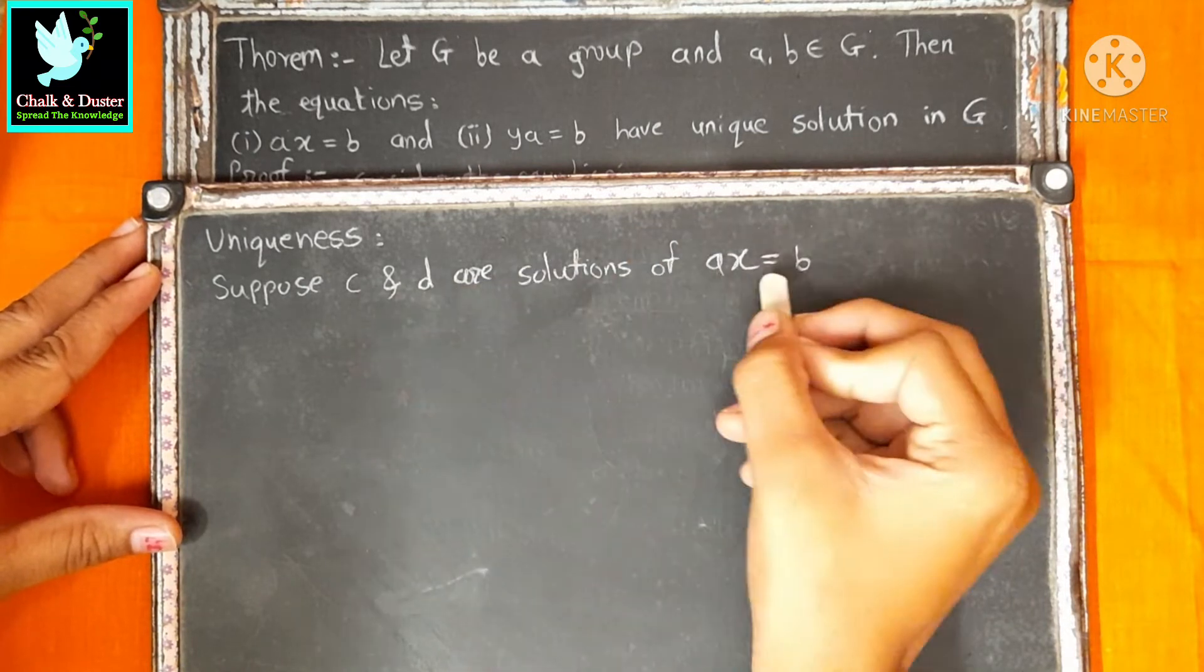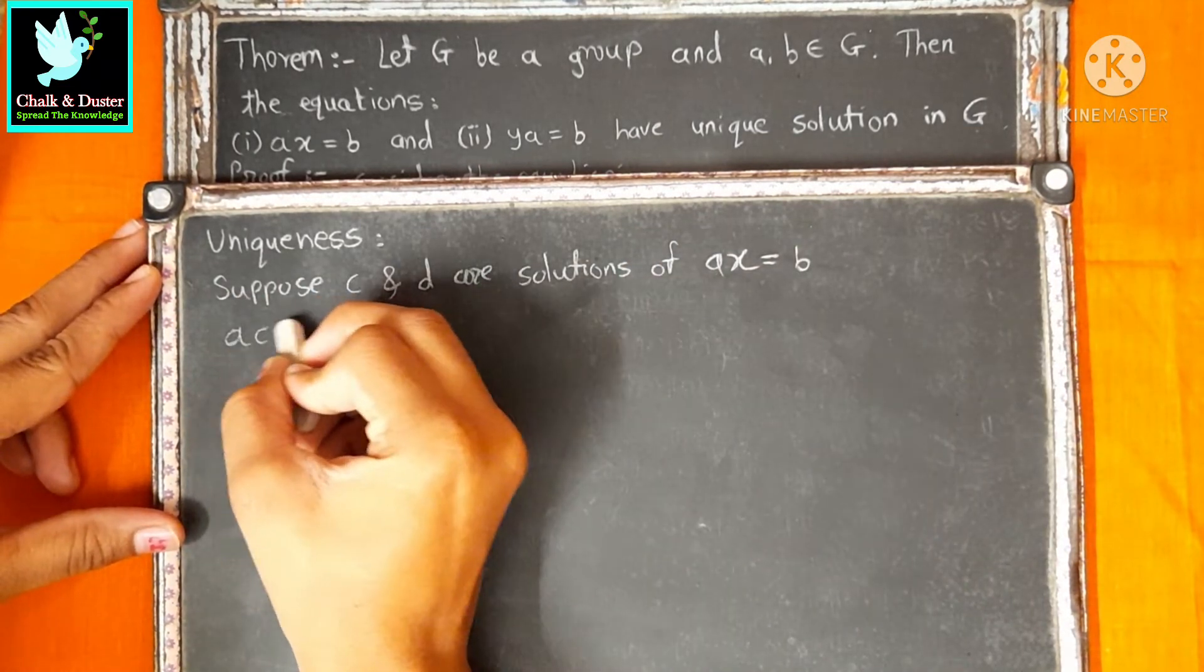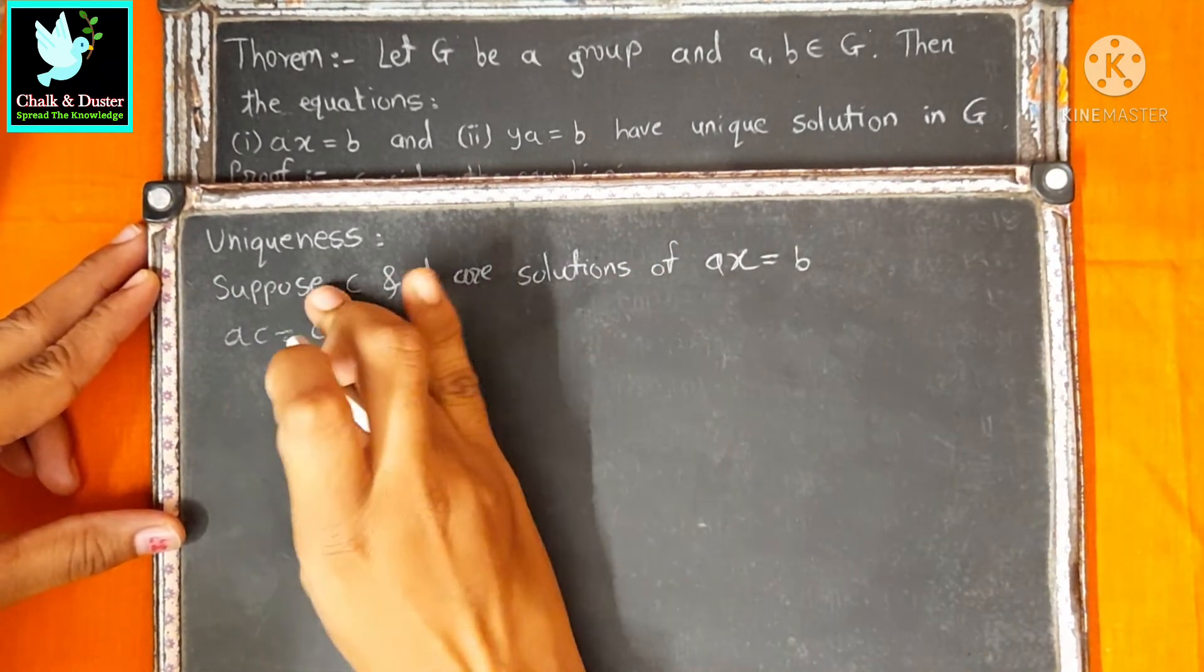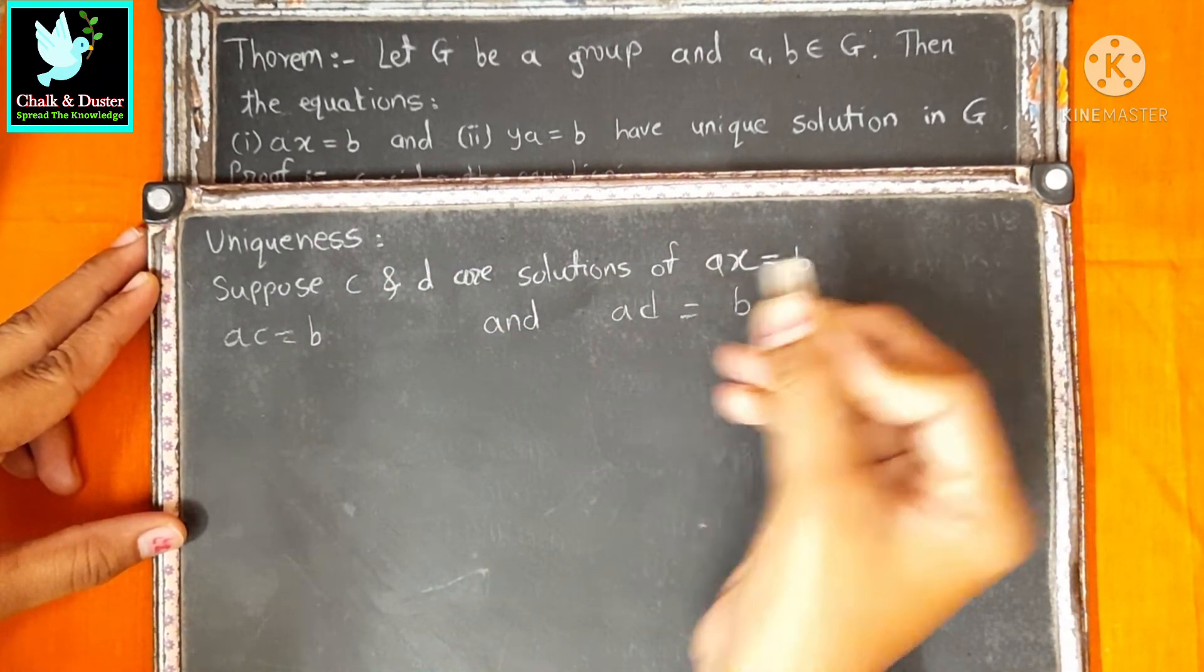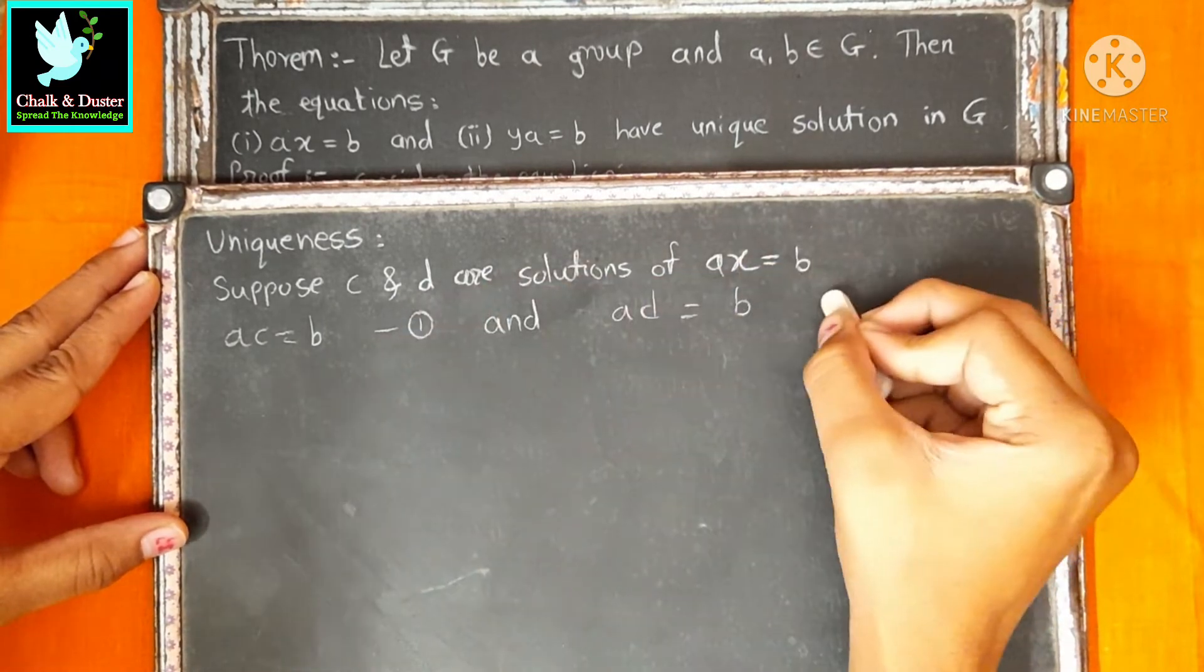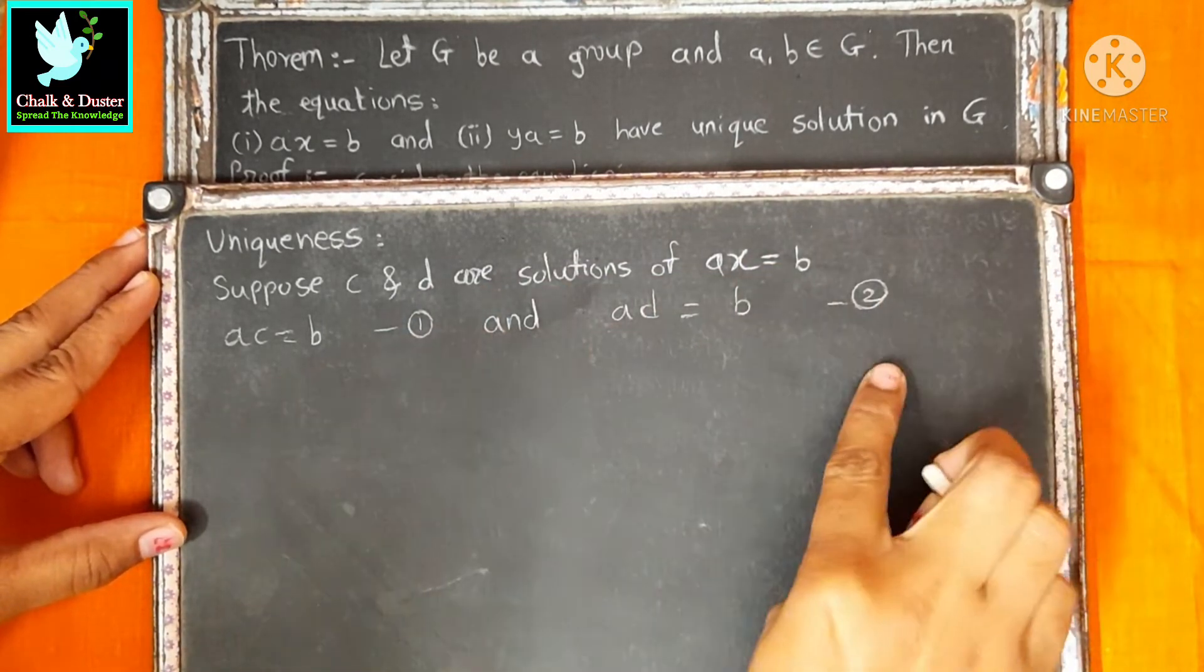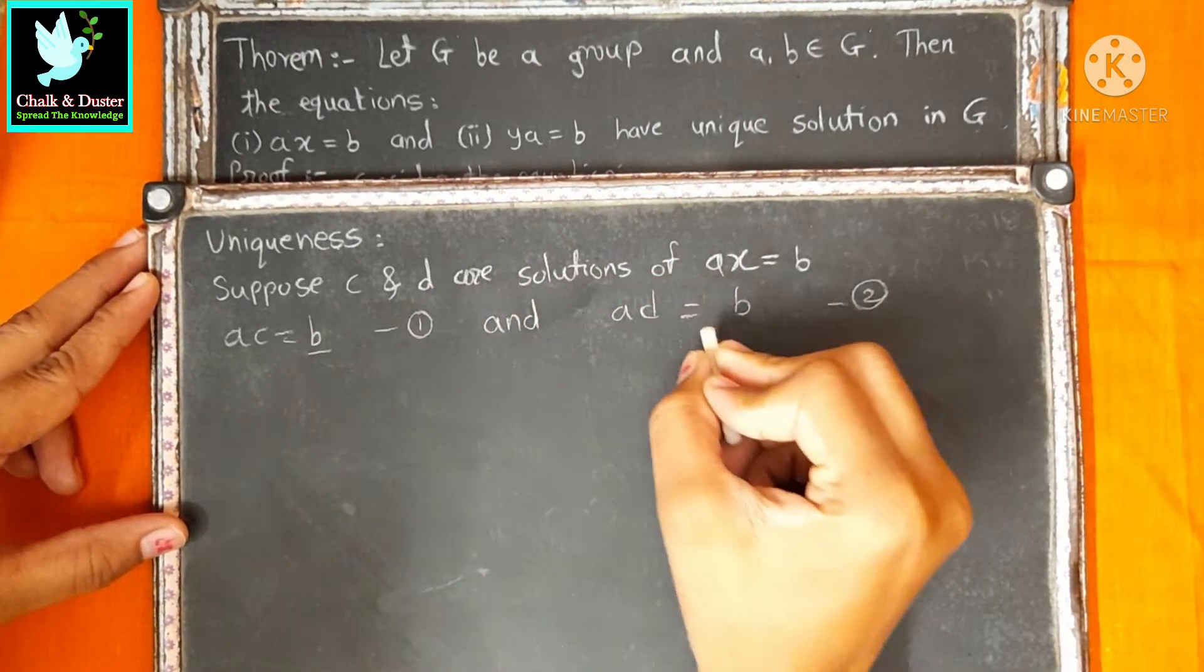If C and D are solutions, this means AC equal to B, equation 1, and AD equal to B, equation 2. Both right sides equal B.